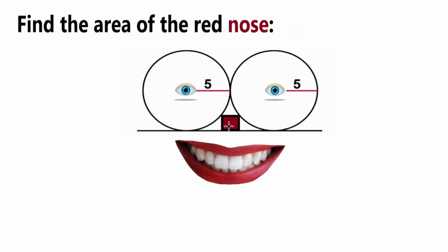We know that the nose square borders these circles — they touch. Using this information we need to figure out the area of the red nose. Since the radius is 5, the distance from the middle of the eye to the edge would be 5, and using this we can set up an equation we can solve using the Pythagorean theorem.